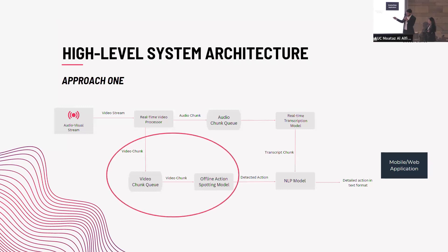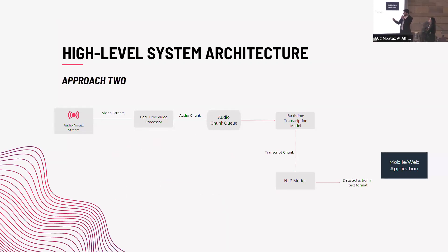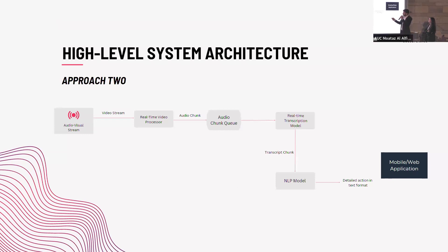After lots and lots of experimentation, we found that the action-spotting part was actually slowing the overall system down and causing it to have less accuracy. So we decided to get rid of this part. This is our latest architecture — it relies mainly on the audio stream that is being processed by the real-time audio processor. In the next few sections, we're going to be discussing each module of this architecture, starting with the real-time video processor.